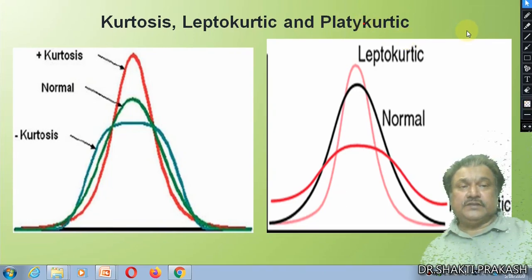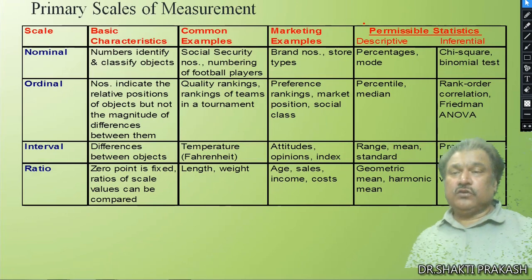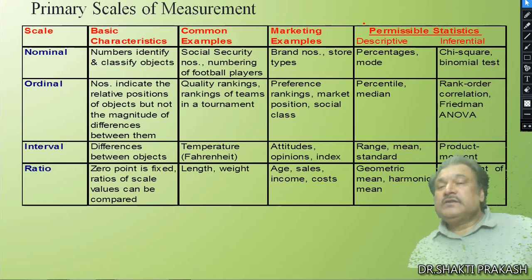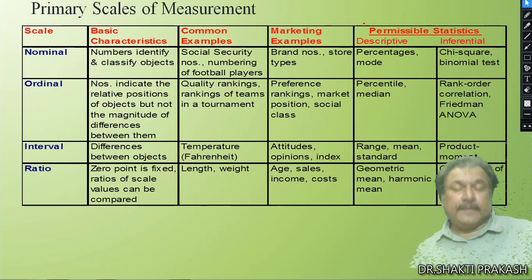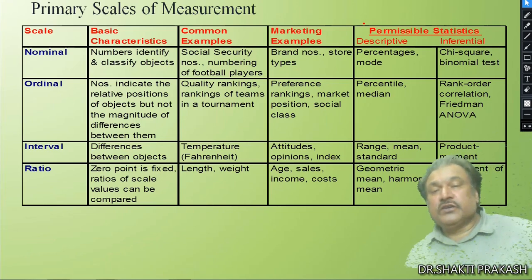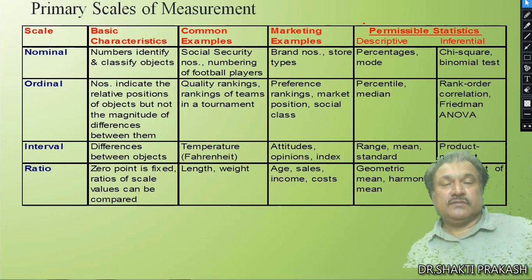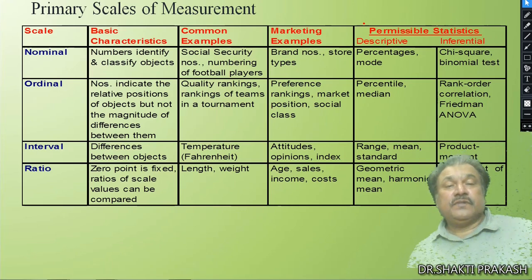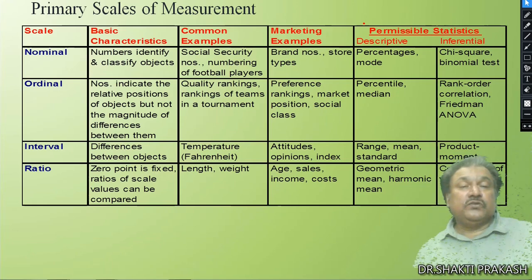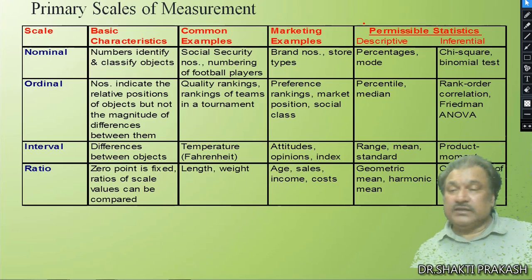The next slide is a summary of the whole topic. Primary scales of measurement: nominal scaling — numbers identify and classify objects. Common examples: social security numbers, numbering of ball players. Marketing examples: brand numbers, store types. Permissible statistics: descriptive — percentage and mode. Statistical tools we can use: chi-square test and binomial test.